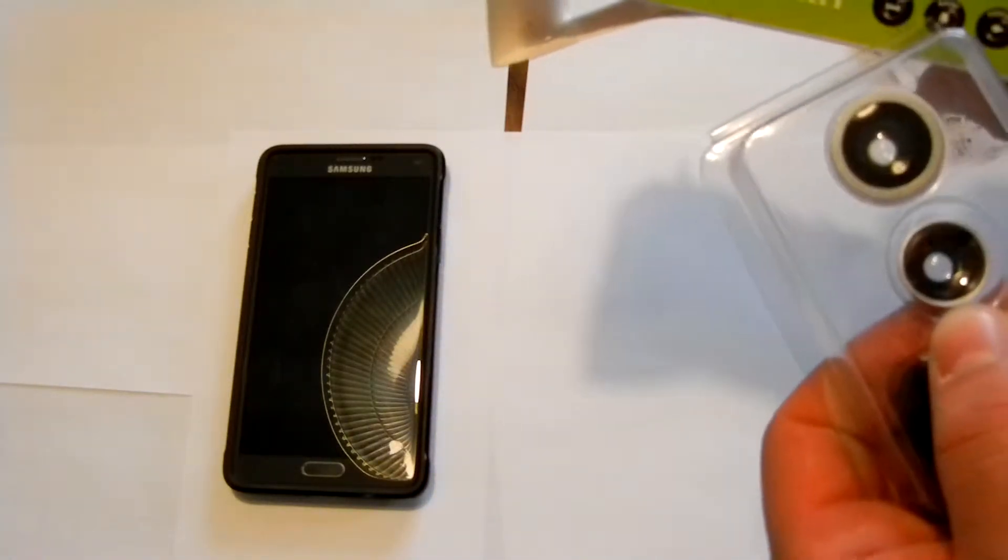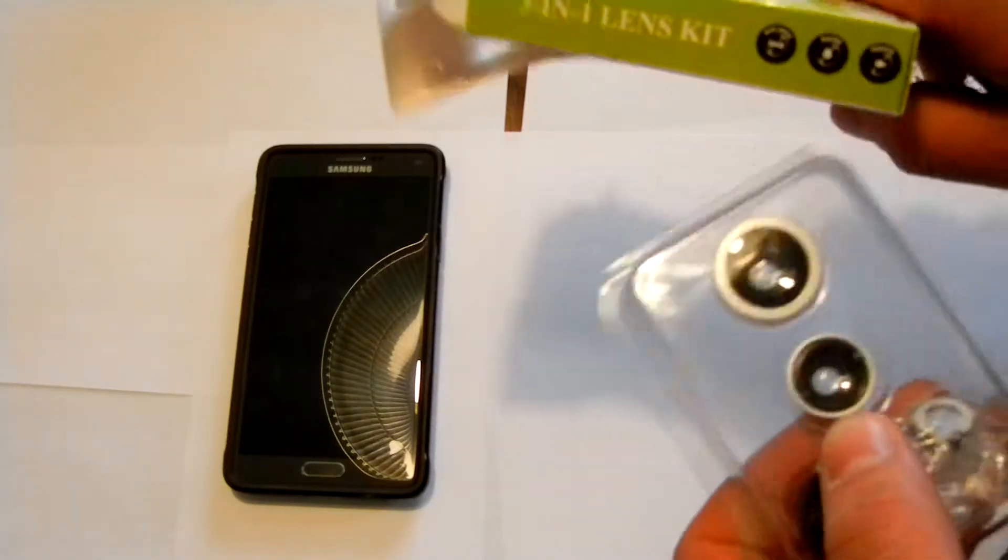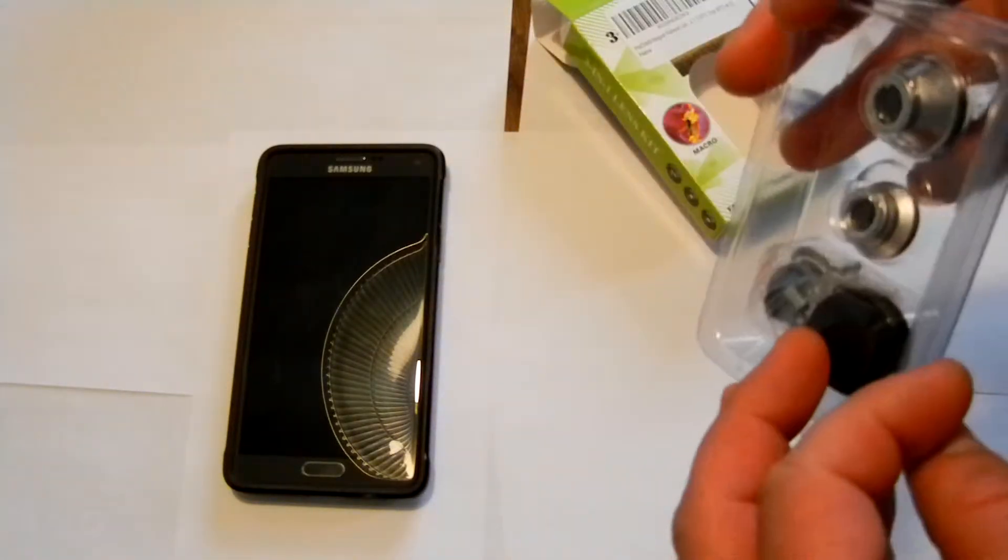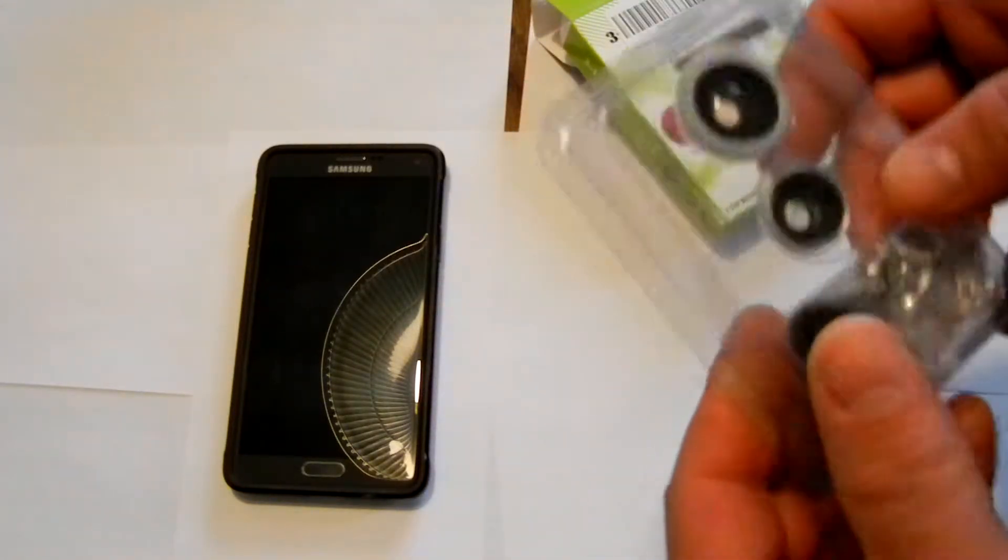There's the wide angle, the macro, and then there's the fisheye. Well, what's going on? I only have two lenses here. Well, I got ripped off. I'm going to return this.